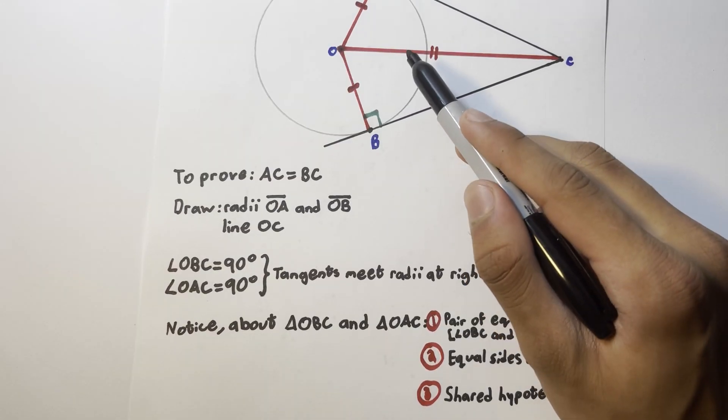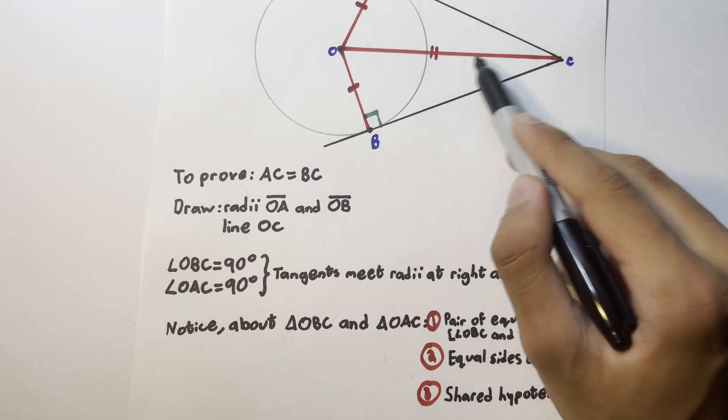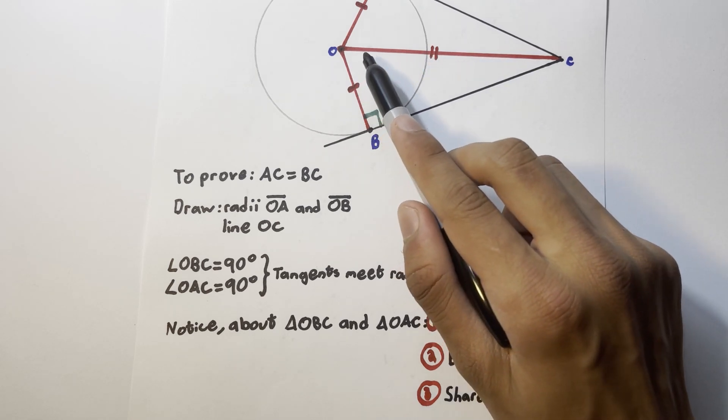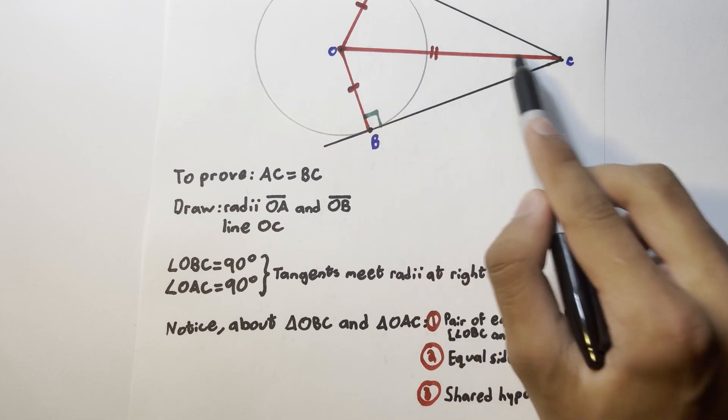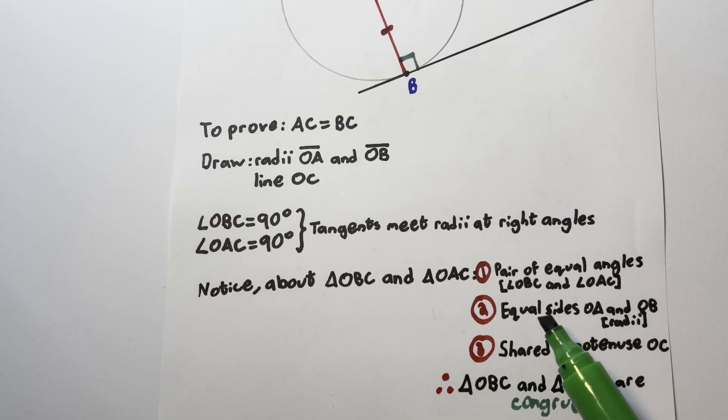Since these triangles are both right angled, we can call their longest side the hypotenuse, and both of them share the same hypotenuse, the line between the origin of the circle and our outside point. Using those three properties of the two triangles, we can say that the triangles OBC and OAC are congruent.